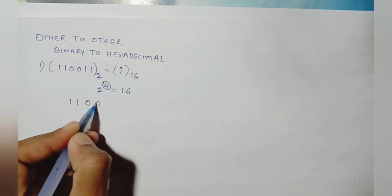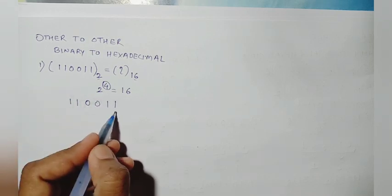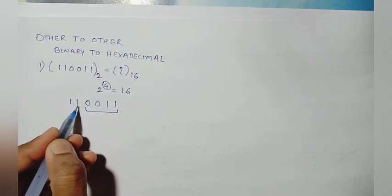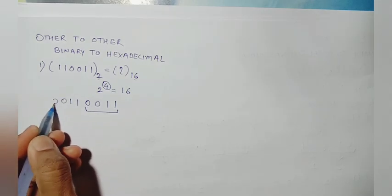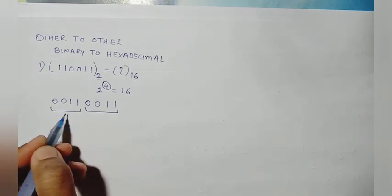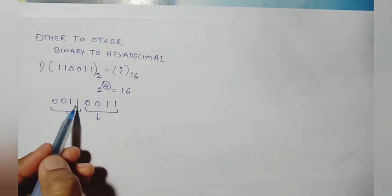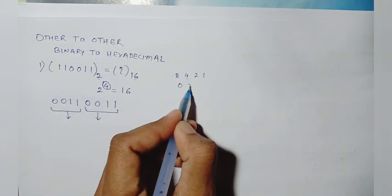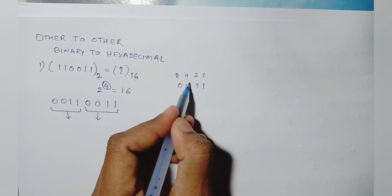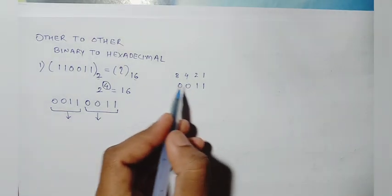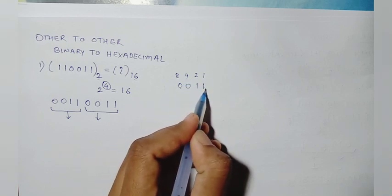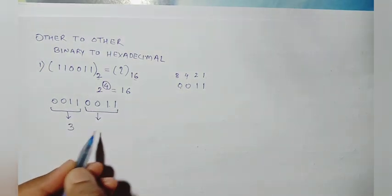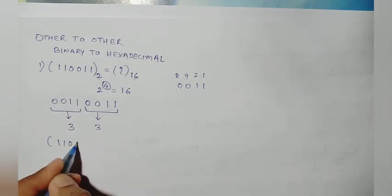Suppose the binary number is 1-1-0-0-1-1. We need to convert it to hexadecimal. From right to left, the first group is 1-1-0-0, and the second group has only 0-0-1-1 after adding two extra zeros. Using the 1-2-4-8 system: for 0-0-1-1, the value is 2 plus 1 equals 3; and again 0-0-1-1 gives 3. So 110011 binary can be written as 33 in hexadecimal.